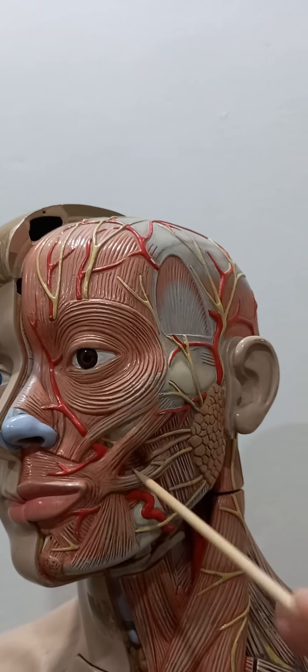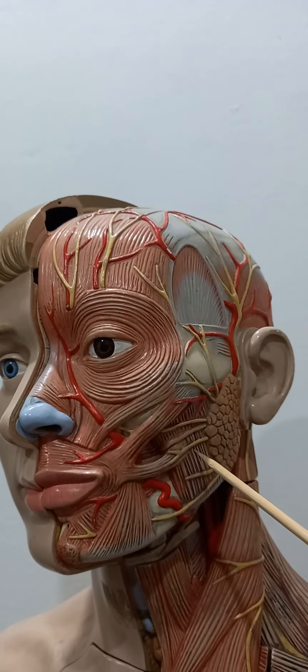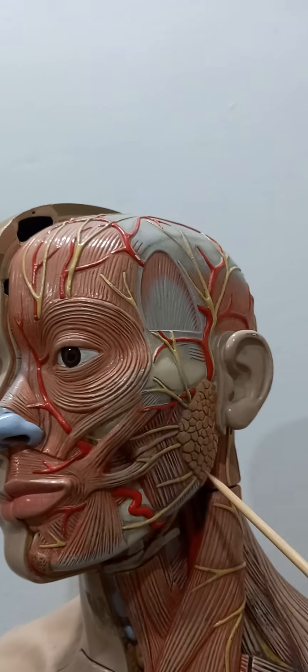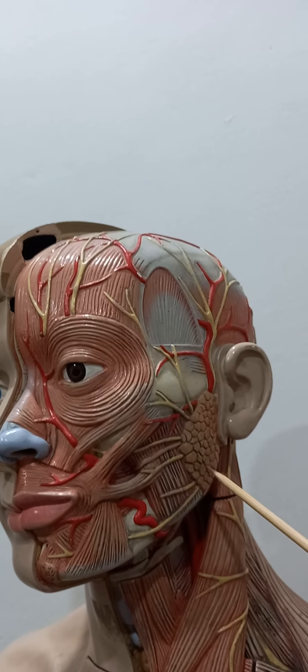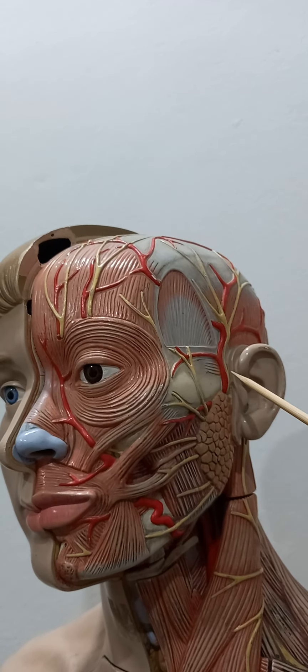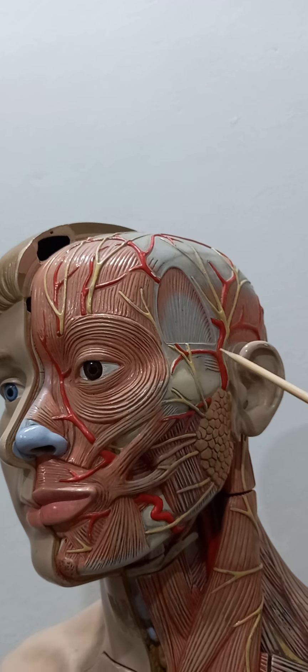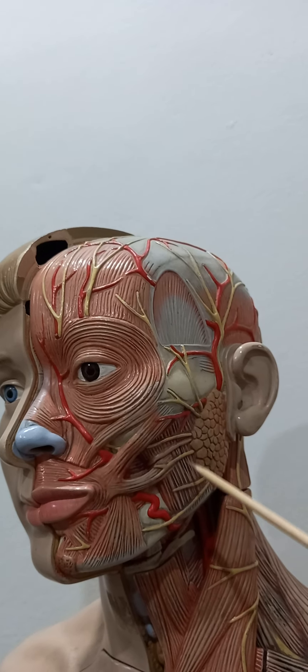Risorius, buccinator, masseter. Then here you can see this is the parotid gland, and above the parotid gland here you can see this is the superficial temporal artery.